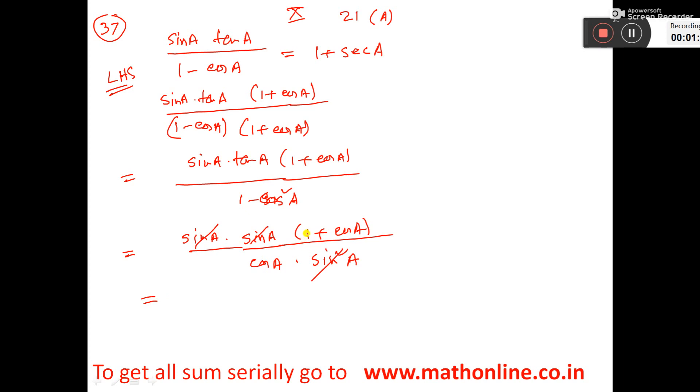Now, you do 1 by cos A plus cos A by cos A, separate this. Cos A by cos A, now this is cut and be 1, and 1 by cos means sec.